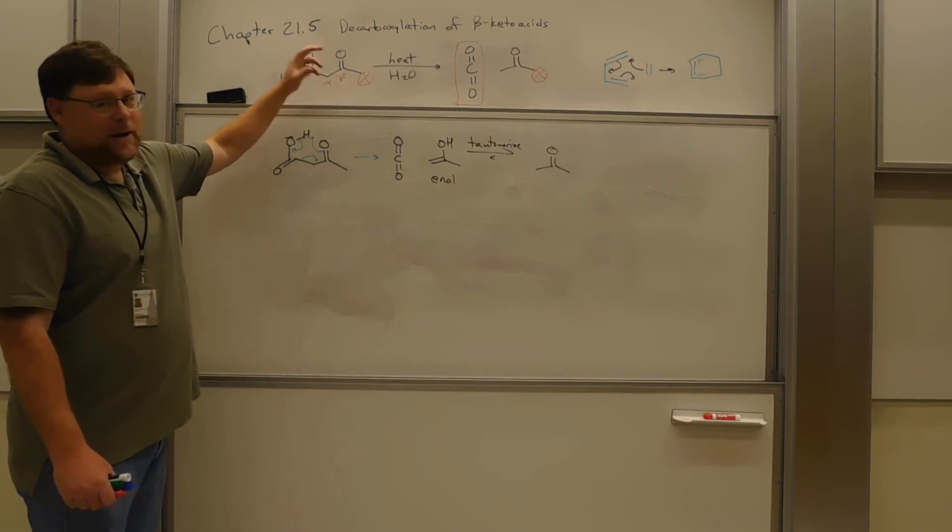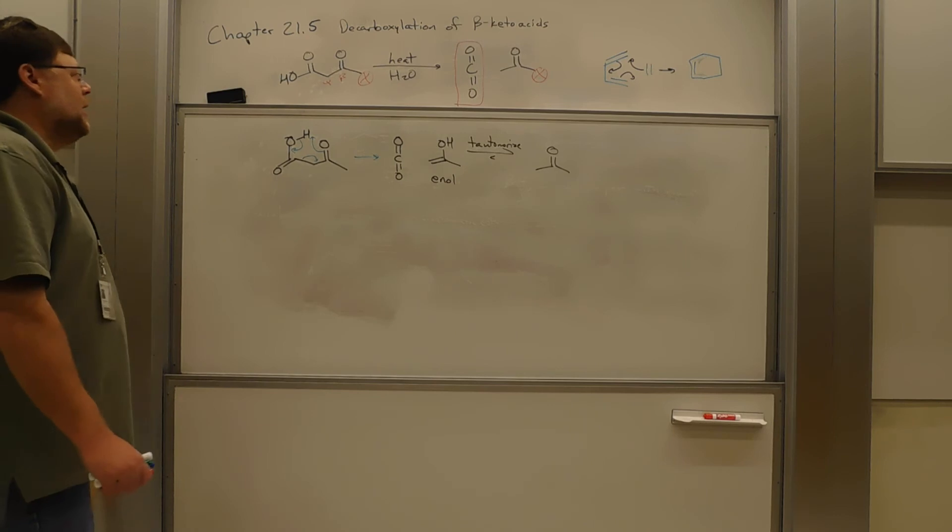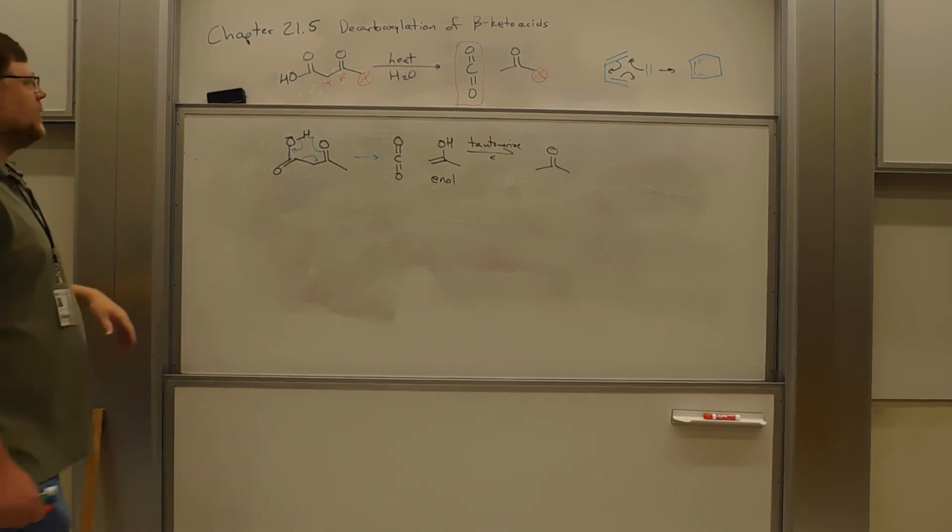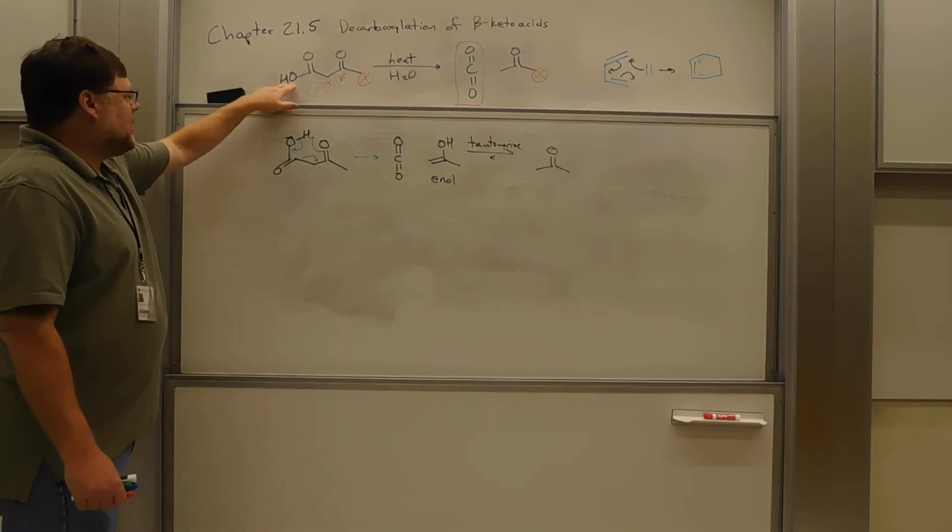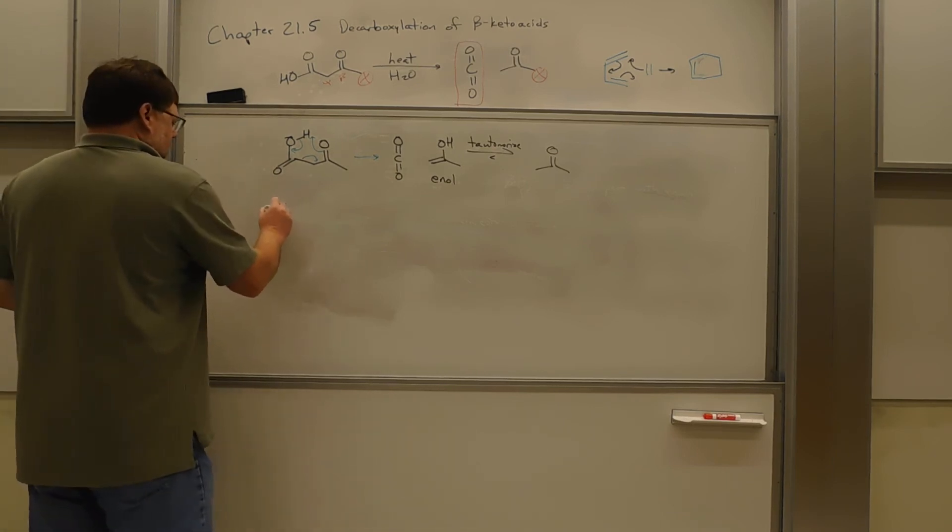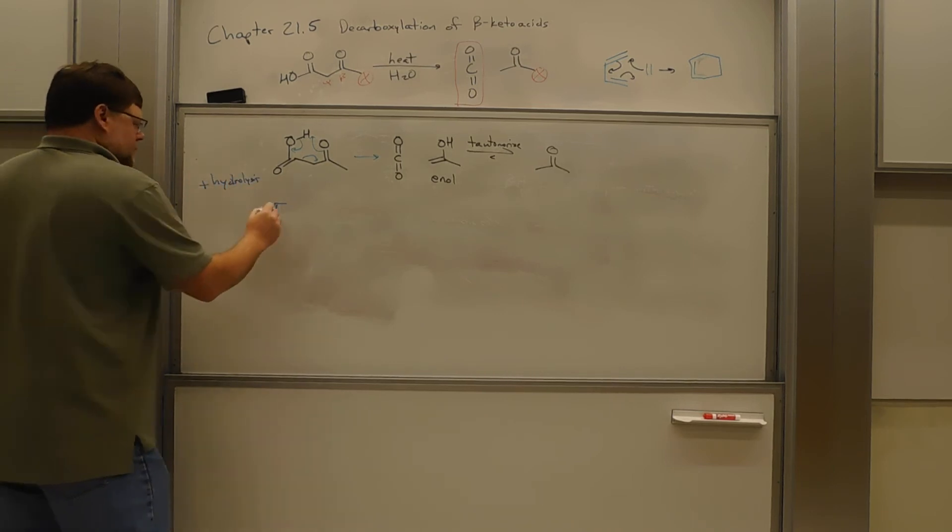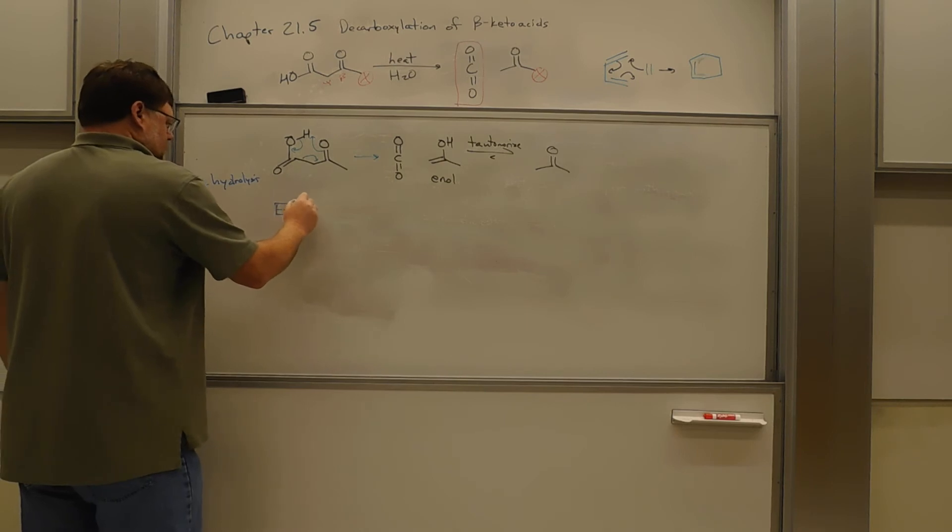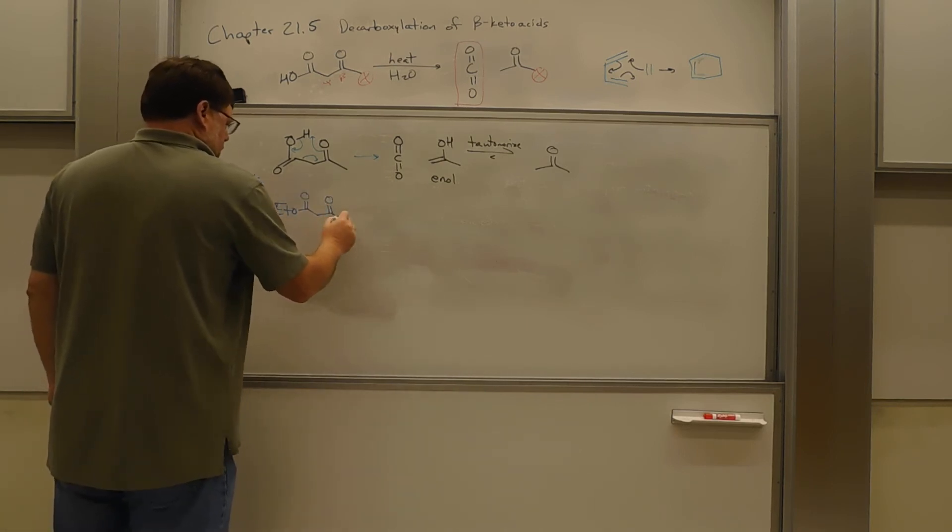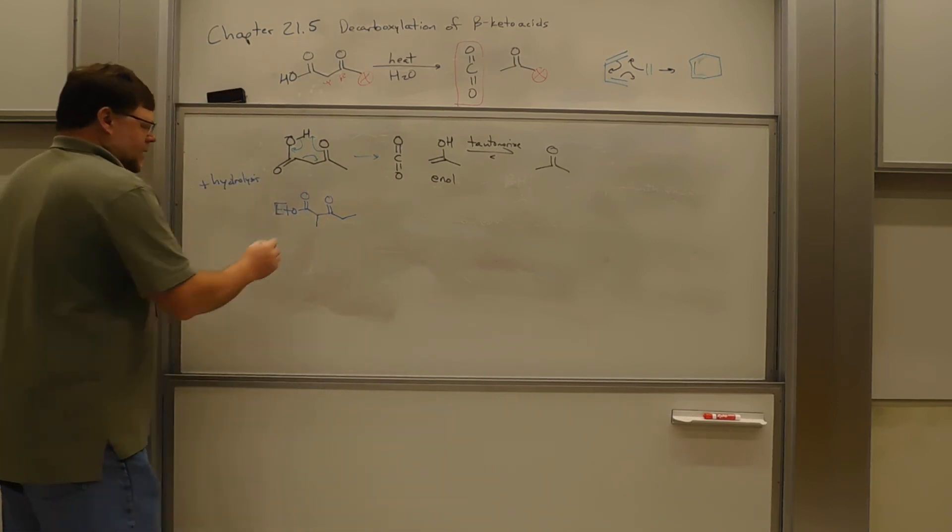And again, the beta-keto can be a ketone. It can be an aldehyde. It can be a carboxylic acid. Anything that will enolize and this has to be in an acid form. So this can, it's often, let's do plus hydrolysis here. So here's, let's put some more stuff on there.